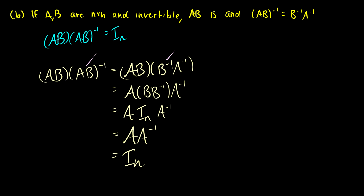On your own, you should also show that B inverse A inverse times AB equals the identity matrix, confirming the other side. This is straightforward and follows the same steps, so please do that on your own.